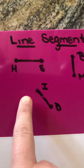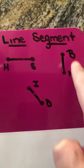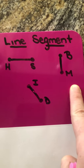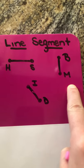So it stops there and there. It starts and stops there. It starts and stops there. So line segment is straight and has two end points.